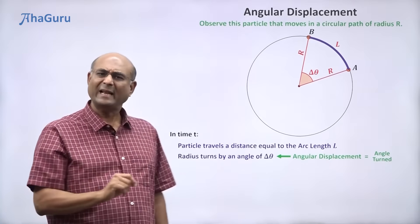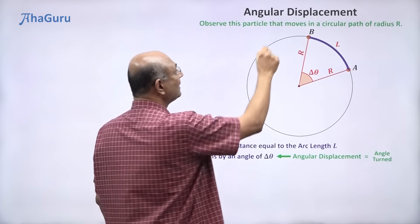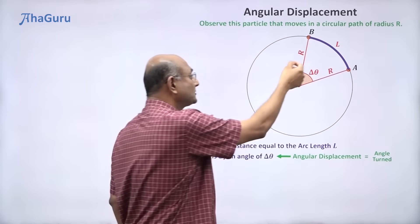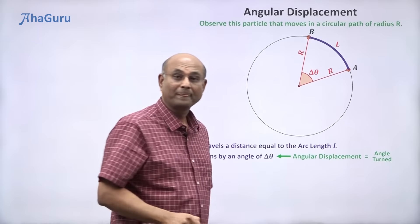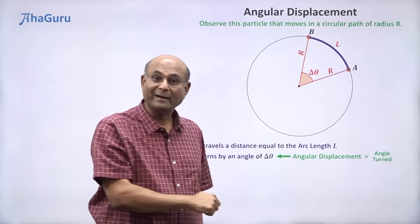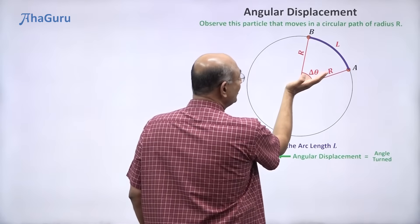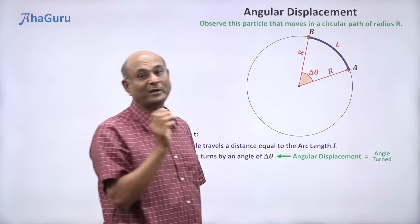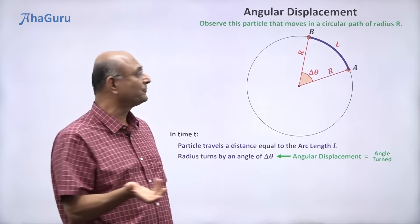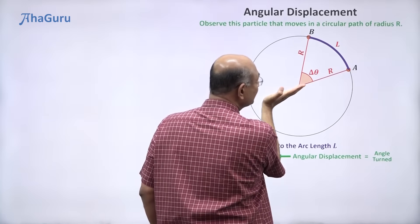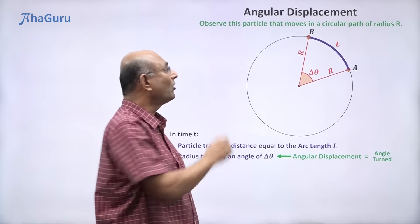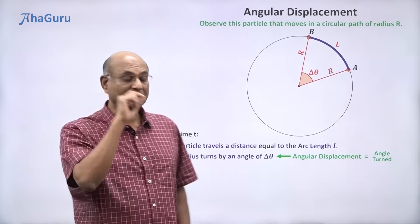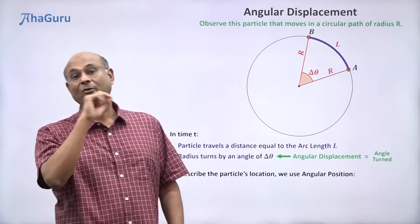It doesn't tell us the position of the object finally or the position of the object initially. Well, you can say it is at b finally. But where is b? b could be anywhere. And if I just told you delta theta was 40 degrees, that is not enough. Because it is 40 degrees from the initial position. But how do I talk about the initial position or the final position? For this, we need the angular position.